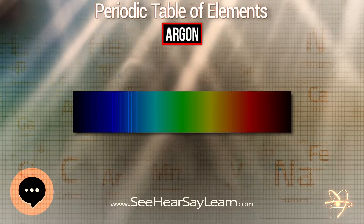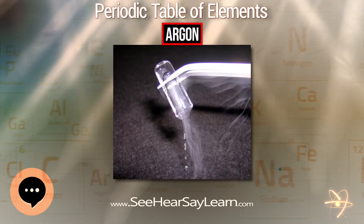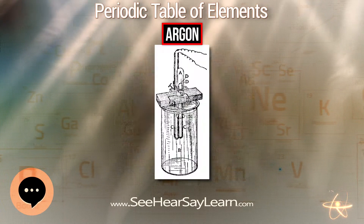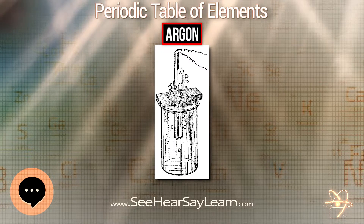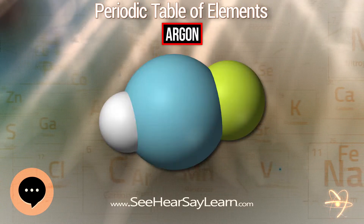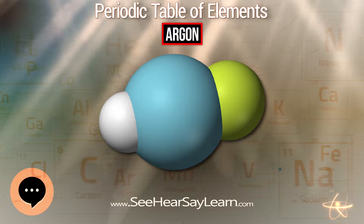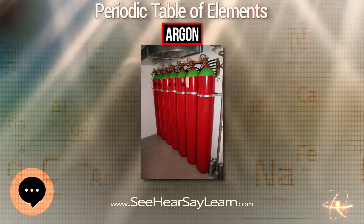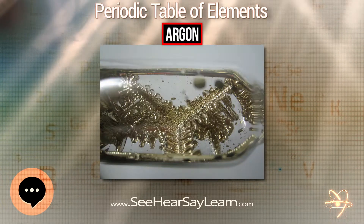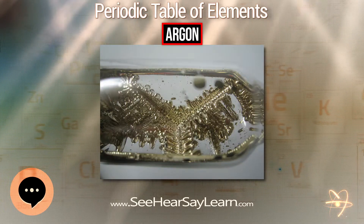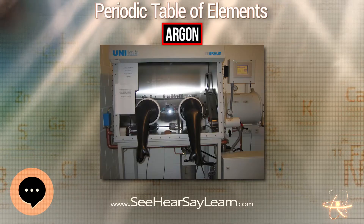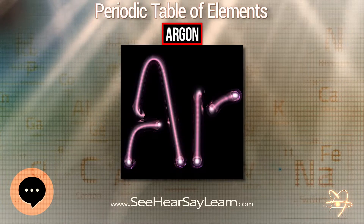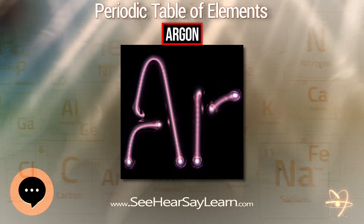Solid argon hydride Ar(H₂)₂ has the same crystal structure as the MgZn₂ Laves phase. It forms at pressures between 4.3 and 220 GPa, though Raman measurements suggest that the H₂ molecules in Ar(H₂)₂ dissociate above 175 GPa. Argon is produced industrially by the fractional distillation of liquid air in a cryogenic air separation unit, a process that separates liquid nitrogen, which boils at 77.3 K, from argon, which boils at 87.3 K.